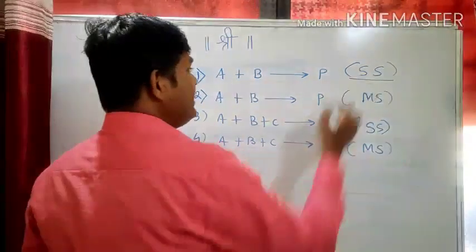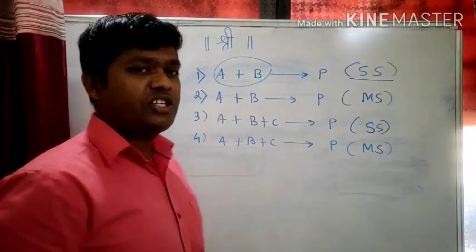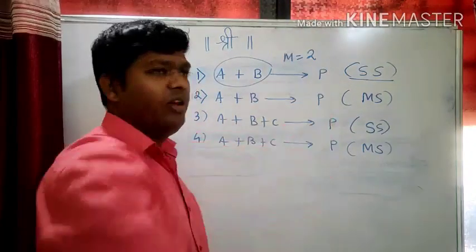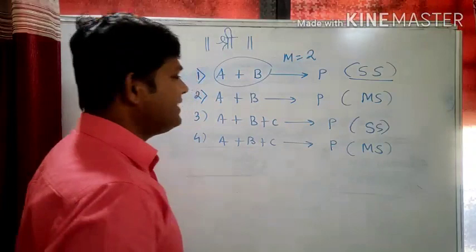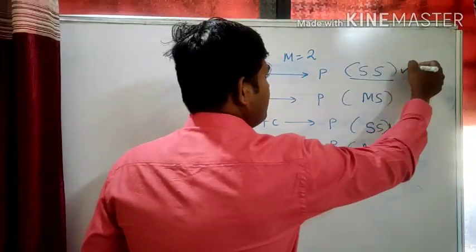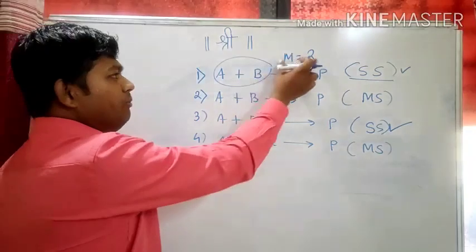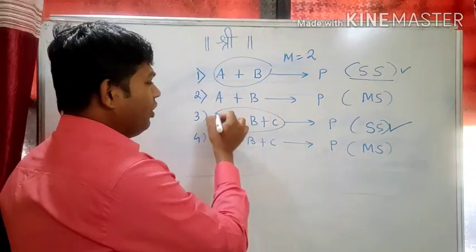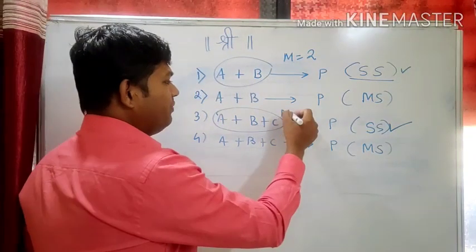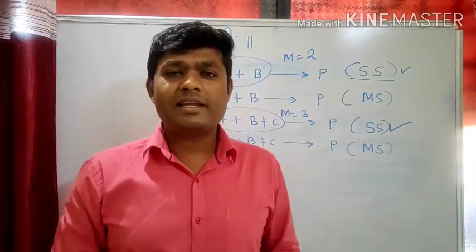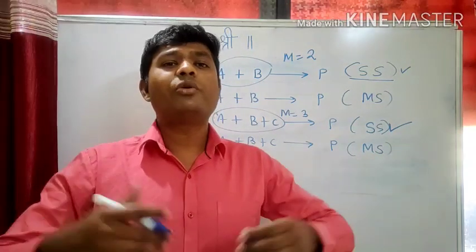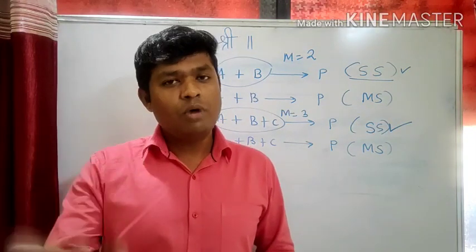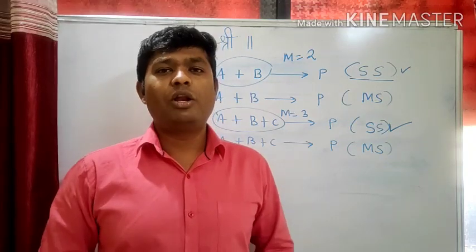As I discussed, for a single step reaction, the number of molecules involved in the reaction is the molecularity. In reaction one, how many molecules are involved? Two molecules are involved — A and B. So molecularity is two. Which is another single step reaction? Reaction three. In that single step reaction, how many molecules are involved? Three molecules — A plus B plus C. So molecularity of reaction three will be three. For a single step reaction you can directly see how many molecules are involved and predict the molecularity.